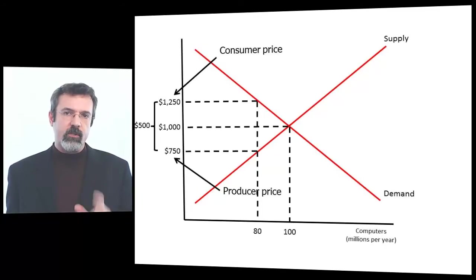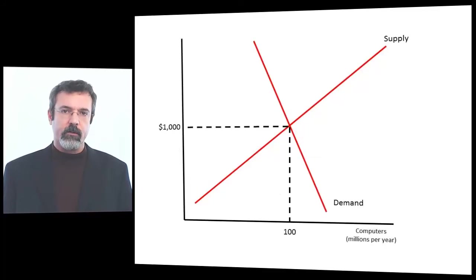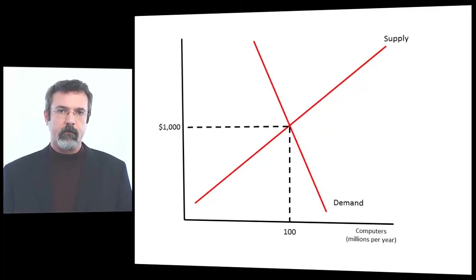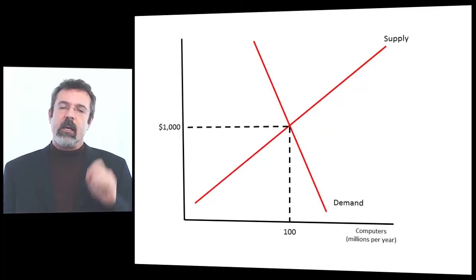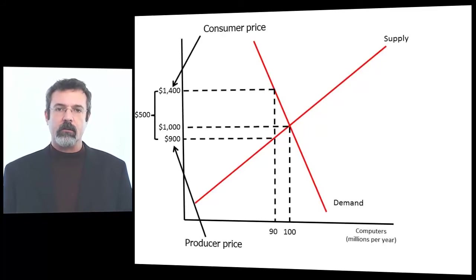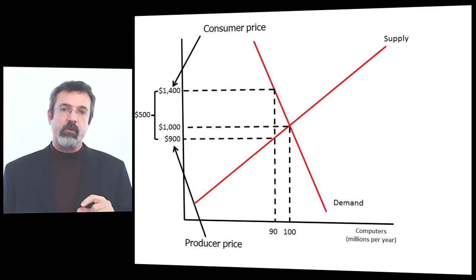Now, suppose consumers regard computers as a necessity. This will be reflected in a steeper demand curve for computers. Without the tax, the equilibrium price is $1,000 — consumers pay $1,000 per computer and producers receive $1,000 per computer. Now we impose a $500 tax. The $500 tax drives the consumer price up to $1,400 and drives the producer price down to $900. So of the $500 tax, consumers are paying $400 while producers are only paying $100.